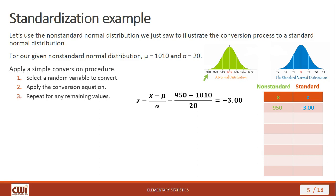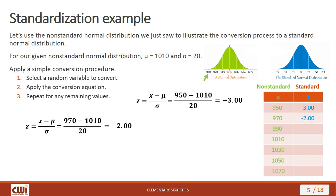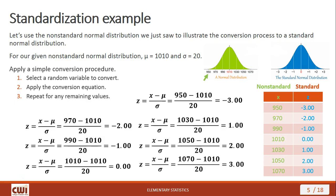We can repeat this process for as many remaining values as we want. Taking the next one, 970: applying the z-score formula gives us negative 2, so we put that in our table. Going through the rest of the values in the non-standard normal distribution and performing the same calculation, we see that those come out to be the z-scores that form our standard normal distribution. That's really all there is to it.